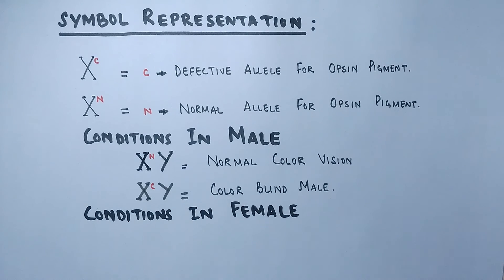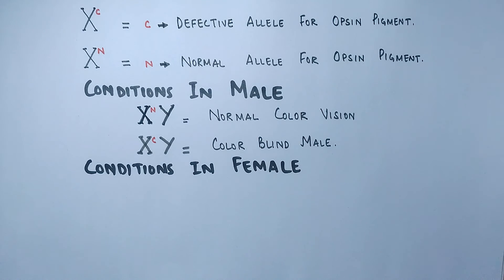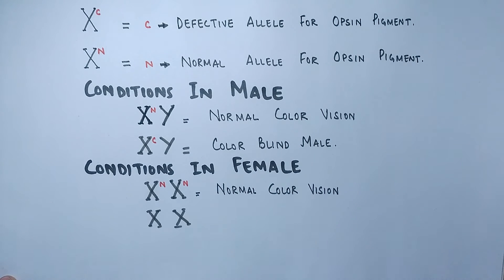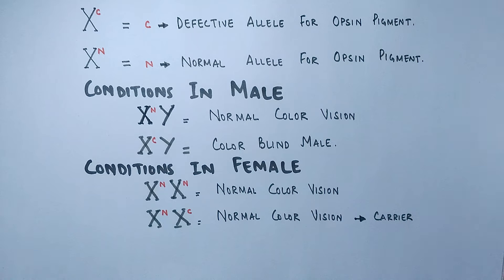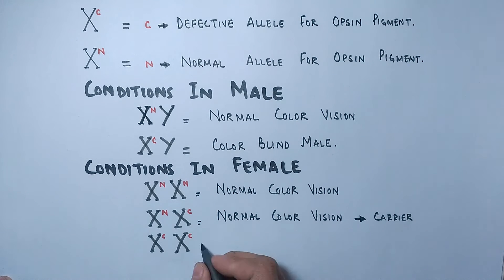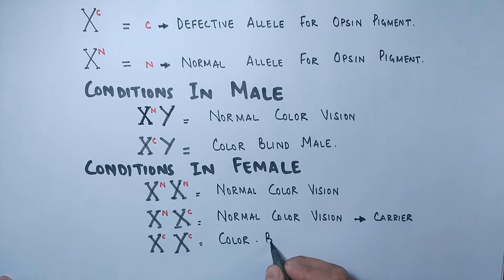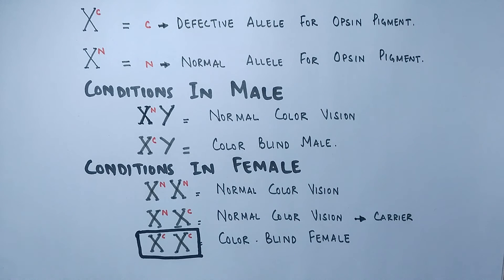For females, the condition X-N X-N gives normal vision. The condition X-N X-C also gives normal vision since this is a recessive trait, but this female will be a carrier. The last condition, X-C X-C — where both chromosomes carry the defective allele — results in a colorblind female.